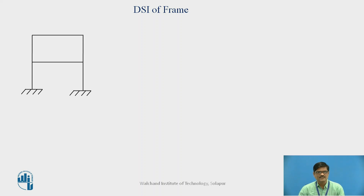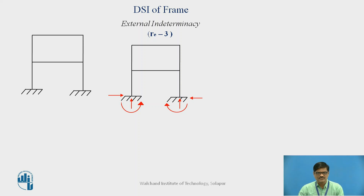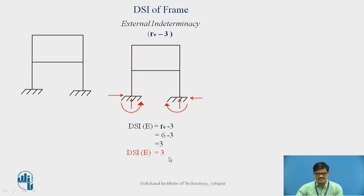Consider this example. Let us discuss how the DSI of a frame is to be determined. First of all, we need to find the external reactions and corresponding indeterminacy. As discussed, external indeterminacy is given by RE minus 3. You can see there are total six unknown reactions — these are called external reactions. Therefore, external indeterminacy = RE minus 3 = 6 minus 3 = 3.